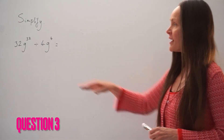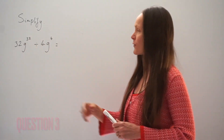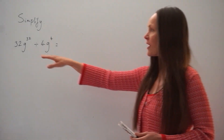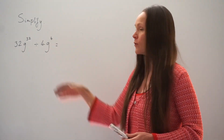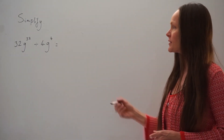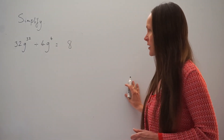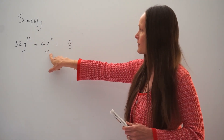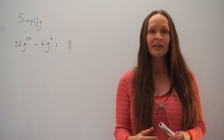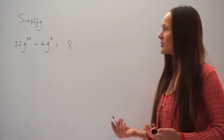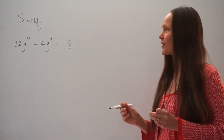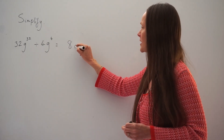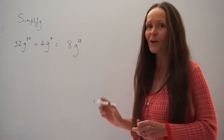In this question, we have to simplify 32g to the power of 32 divided by 4g to the power of 4. First, we divide the numbers 32 and 4 as we would usually, so 32 divided by 4 is 8. Next, we are dividing g to the power of 32 by g to the power of 4, so we subtract their powers: 32 take away 4 is 28, leaving us with g to the power of 28. So the final answer is 8g to the power of 28.